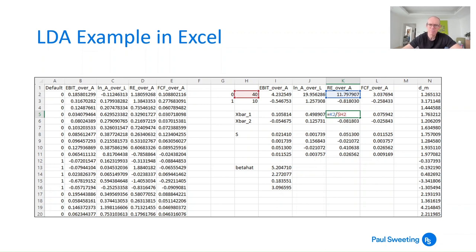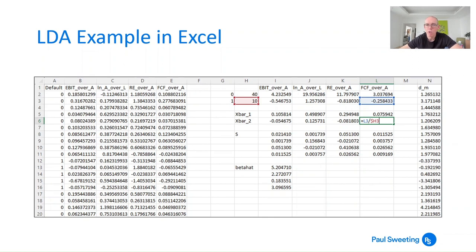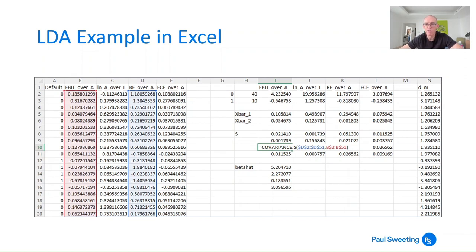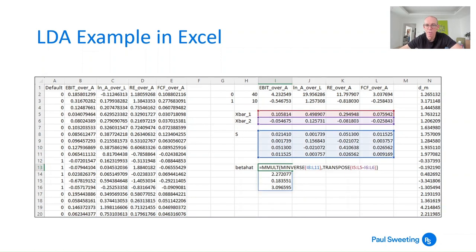Cells I5 to L5 form the vector of averages x-bar-one, and I6 to L6 is x-bar-two. Because I'm doing Linear Discriminant Analysis rather than Fisher's Linear Discriminant, I only need to calculate the covariance matrix across all the firms, which is quite convenient. This shows the covariance matrix — covariance between the first series with itself (the variance), between the third and first series, and so on. Then it's fairly straightforward to get from the two vectors in rows five and six and the matrix in rows eight to eleven to the beta hats.